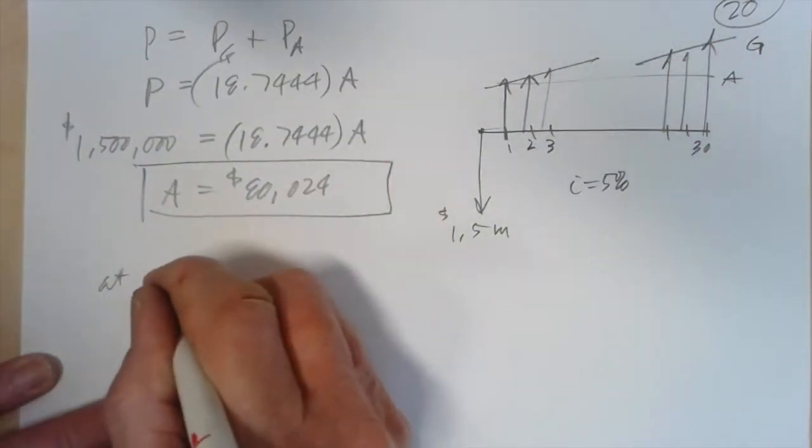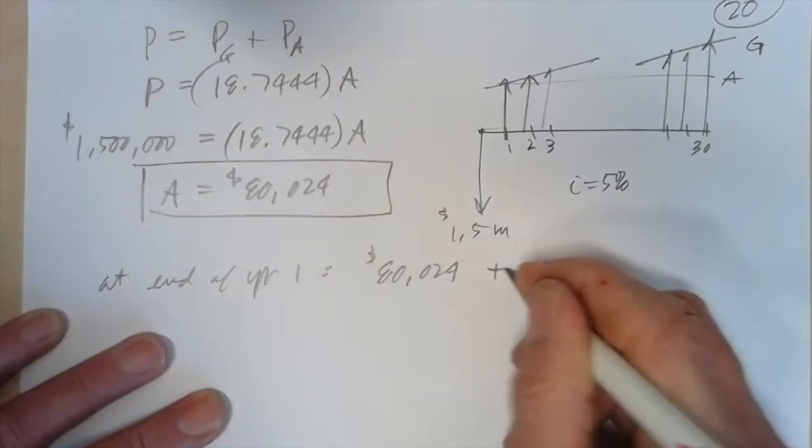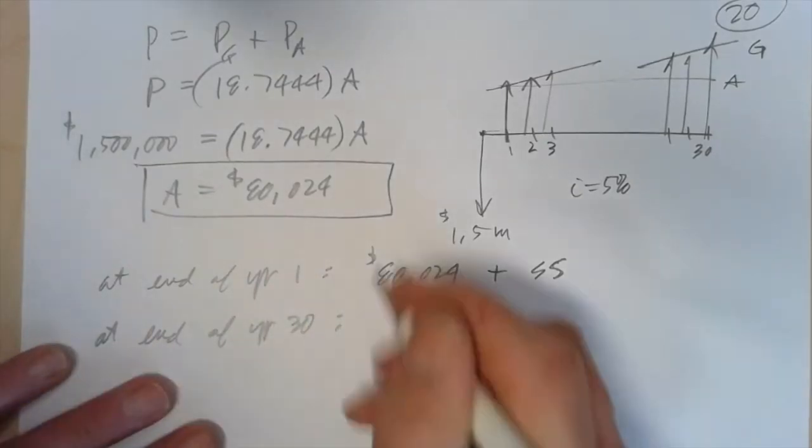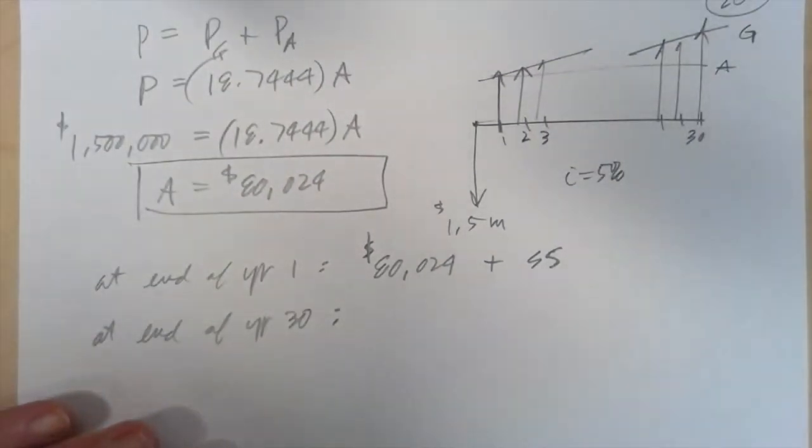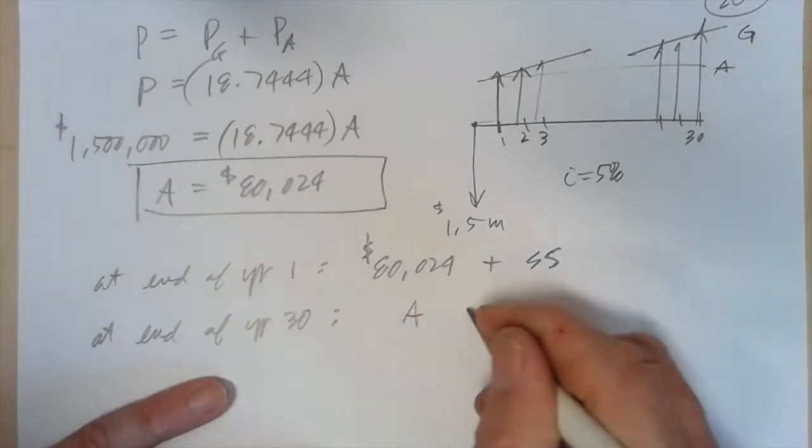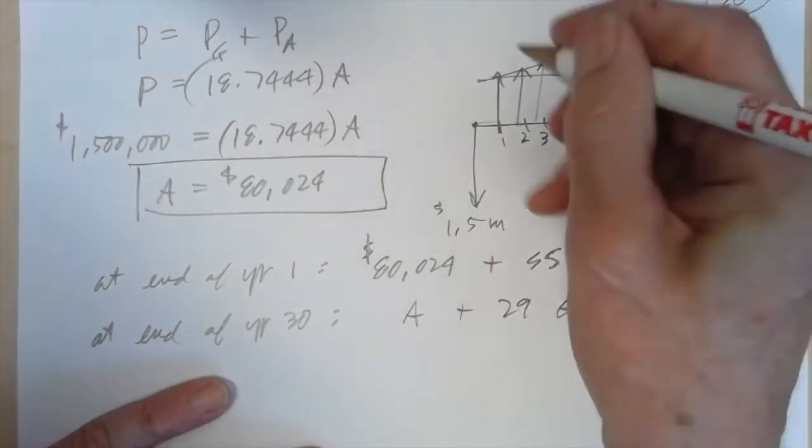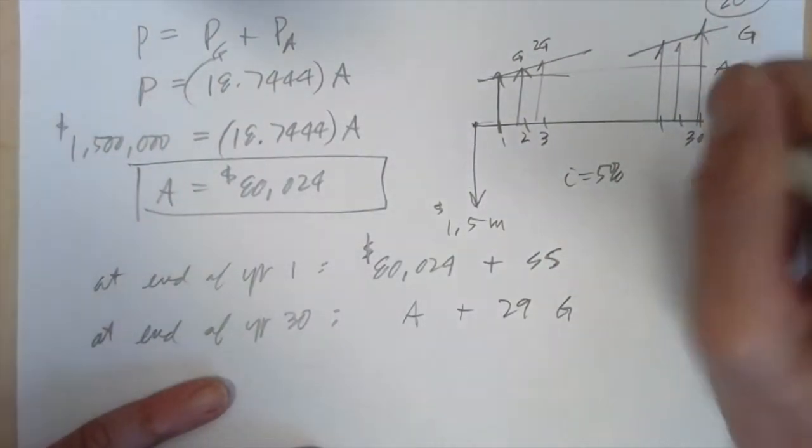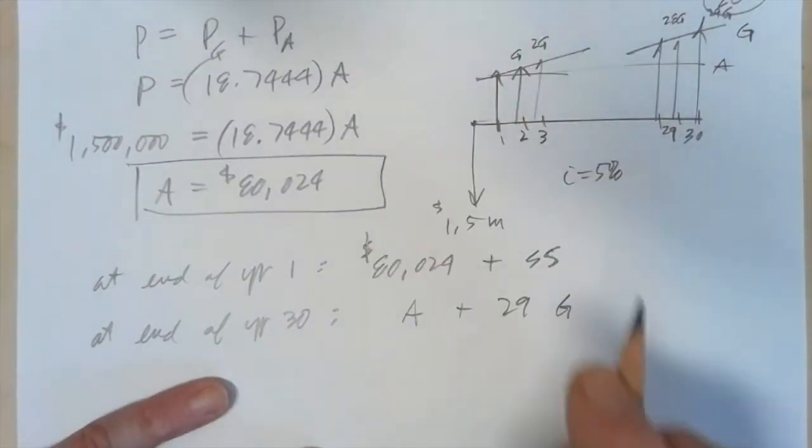So at the end of year 1, it's going to be $80,000 plus Social Security. Now what about the end of year 30, which most likely I will not make it? And frankly, I don't desire to live to be 97. I don't know. Whenever I die, I will have lived a good life, a good long life. So what's the end of year 30? It is going to be A plus 29G. Now why 29? Because remember, the G skips the first year. So at the end of the second year, you add a G. At the end of the third, you add two Gs. At the end of the 29th year, you're adding 28 Gs. And at the end of the 30th, you're adding 29 Gs.